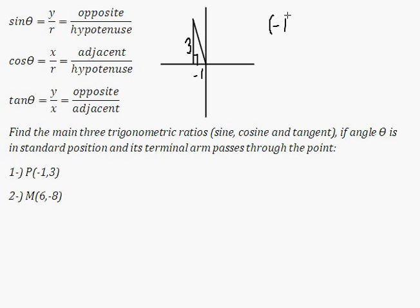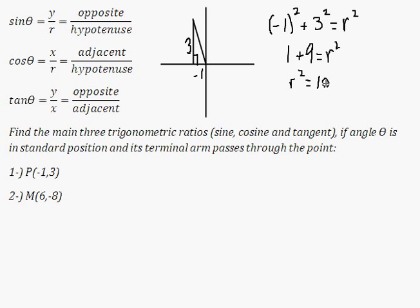Negative 1 squared plus 3 squared equals r squared. 1 plus 9 equals r squared. r squared is 10, therefore r is the square root of 10.